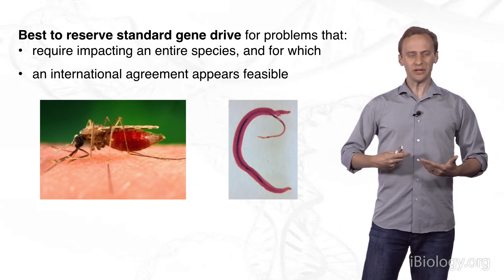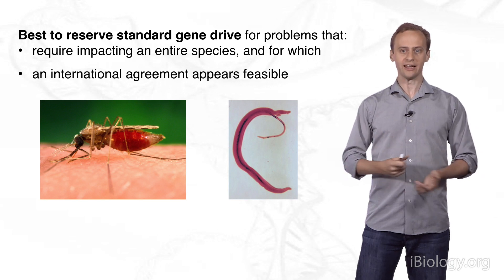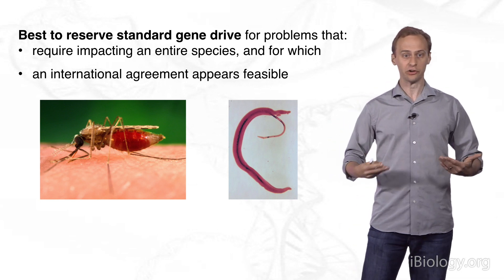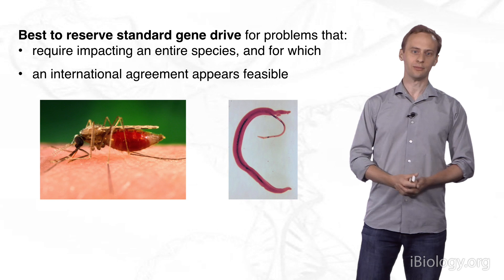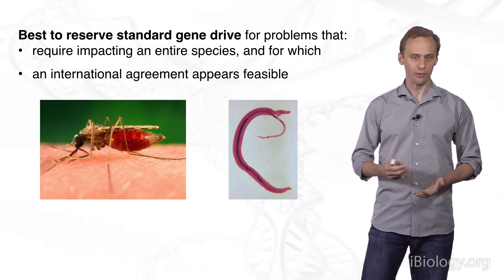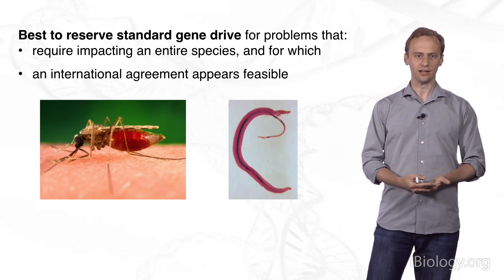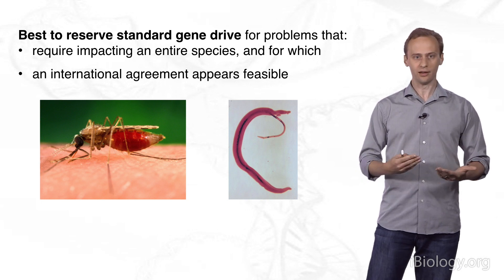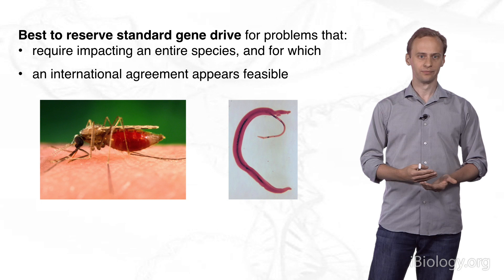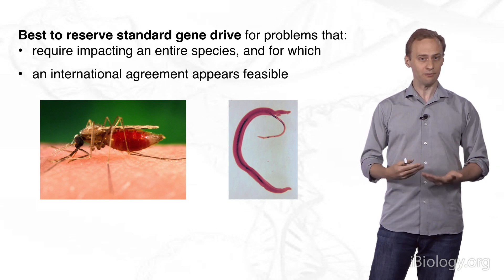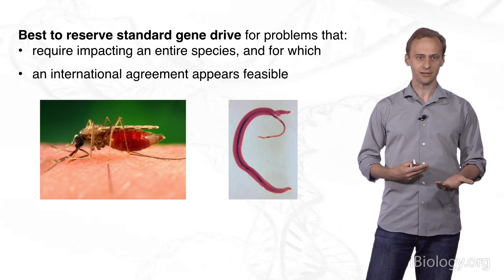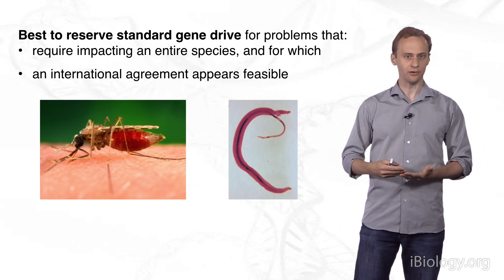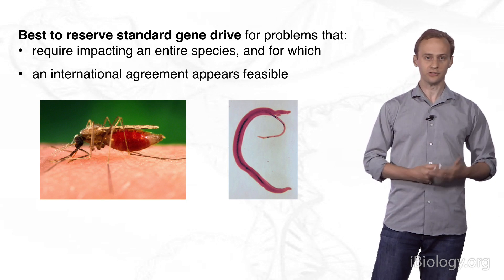Put all this together, and that means that we should probably reserve standard self-propagating gene drive for problems that require us to affect an entire species, and for which an international agreement among the affected countries is likely to be feasible. The number one such application is indeed the eradication of malaria. Malaria is such an awful disease. It inflicts such a terrible toll. More than half a million people annually, 200 million infections. Most of those who die are children under the age of five. This is a problem that is so severe that it's possible to imagine an international agreement among countries of the African Union to use it even without field trials.